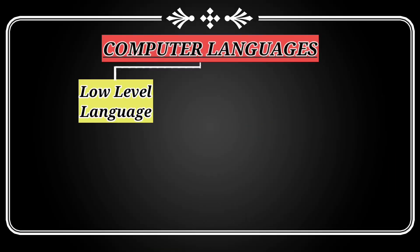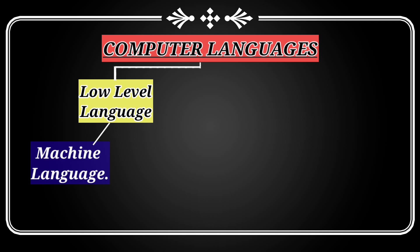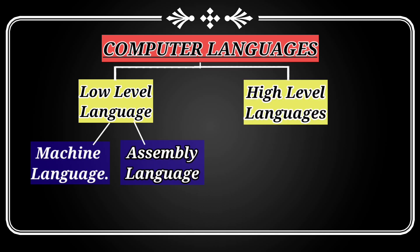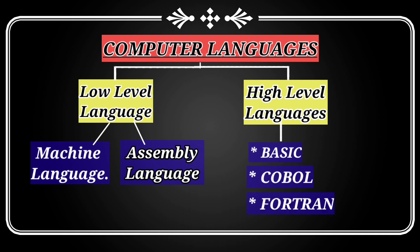Computer languages. Low-level language — the term low-level means closeness to the way in which machines understand. The low-level languages are machine language and assembly language. High-level language — designed for the ease of the person writing the language. Various high-level languages are: Basic, COBOL, FORTRAN, C, C++, etc.